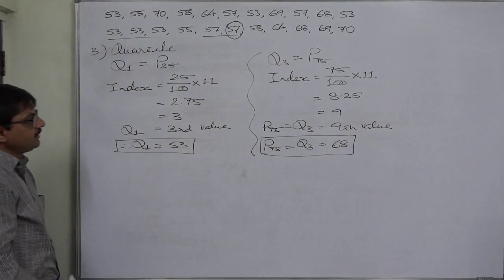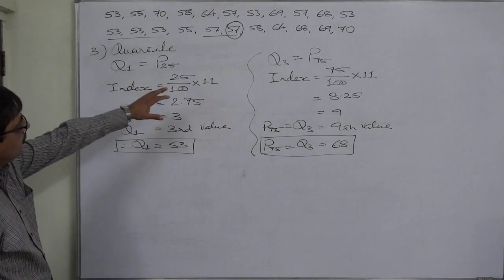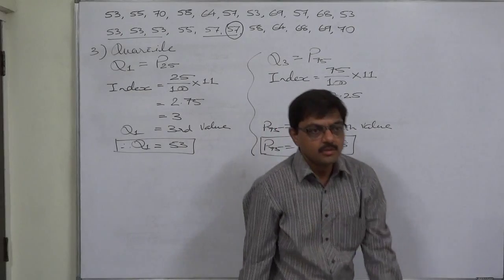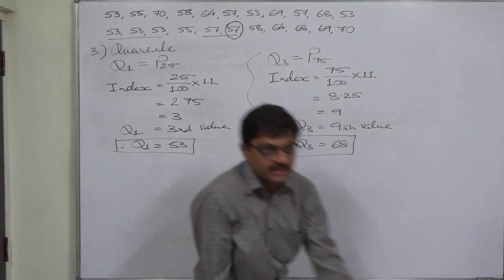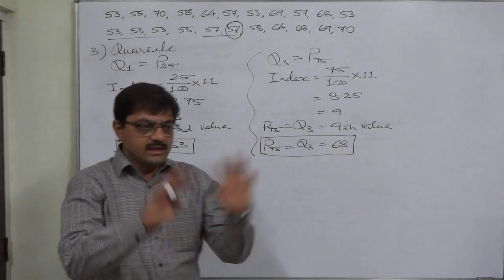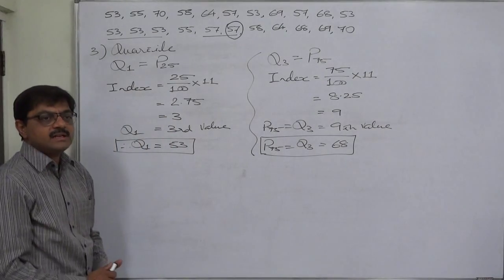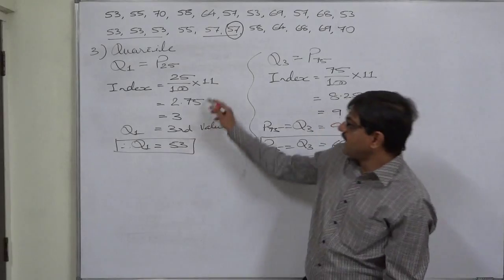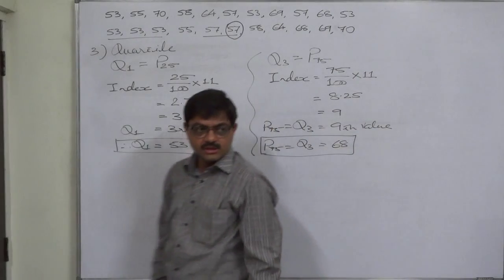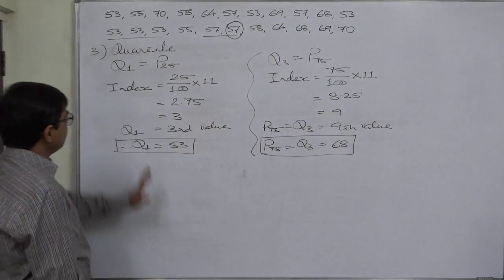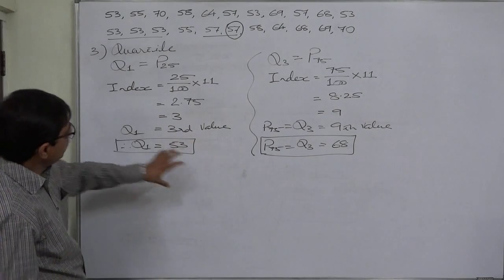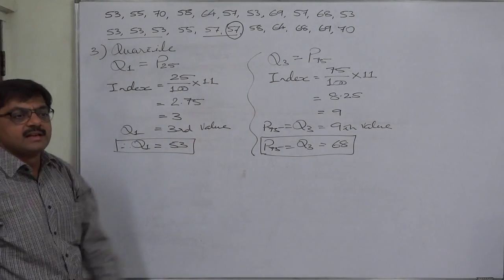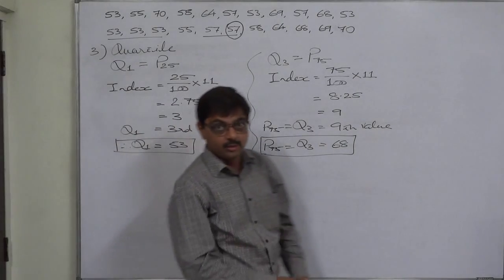So we have found the mean, mode, median, quartiles, and percentiles of the data. All together, these are known as measures of central tendency. The measures of the median family are also known as measures of location, because their value is based on the location in the data arranged in ascending order. Thank you.